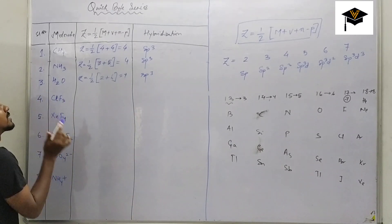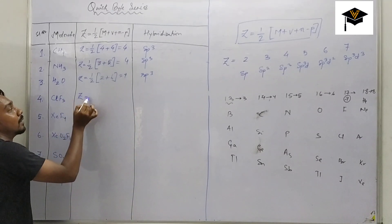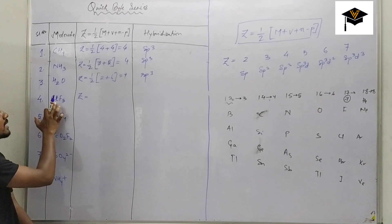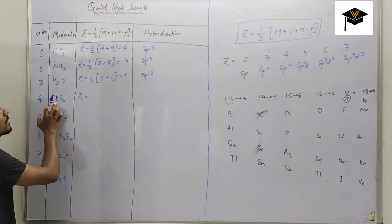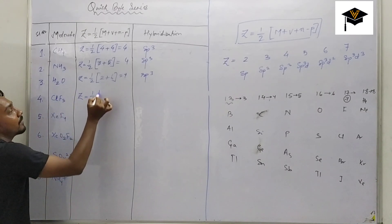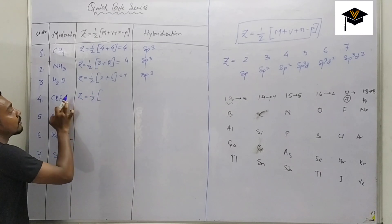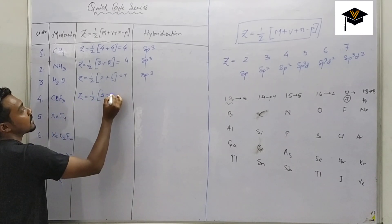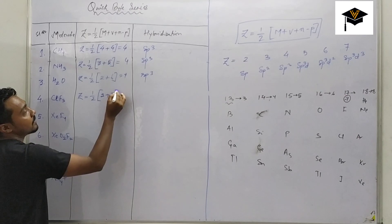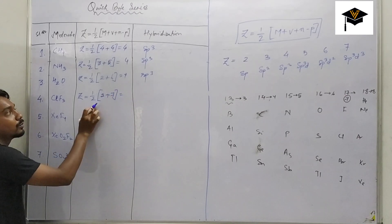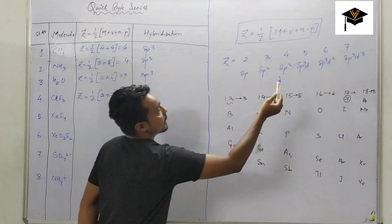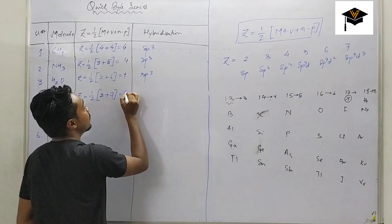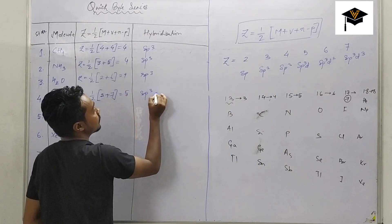Now for ClF3: both are halogens, so we look for the one least in number — chlorine is the central atom. Z = ½ × (M + V) = ½ × (3 + 7). Chlorine belongs to group 17, so valence electrons = 7. Z = ½ × 10 = 5. Since Z = 5, the hybridization is sp³d.